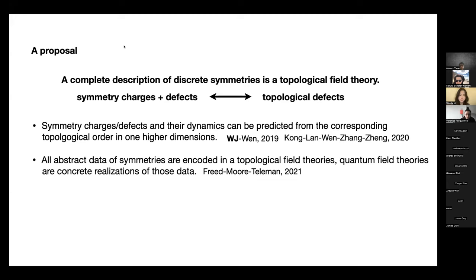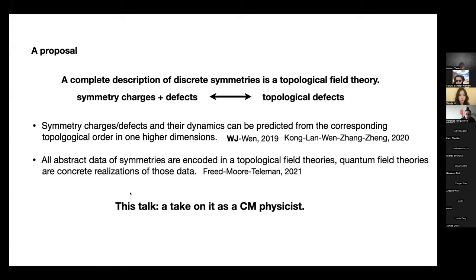That's why we care about this as condensed matter physicists. If you are a high energy physicist or a mathematician, you care about other aspects. In their own words, mathematicians care because they think that all the abstract data of symmetries are going to be encoded by topological field theories, and any quantum field theory that has a symmetry is just a concrete realization of those data. This statement involves very deep mathematics, but in this talk I want to share our take as a condensed matter physicist.